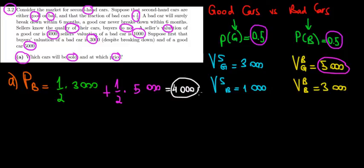The willingness to pay of the buyer is 4,000 euros. Now, the seller is willing to sell the good cars for 3,000 euros. So if the price is greater than 3,000 euros and at most 4,000 euros...